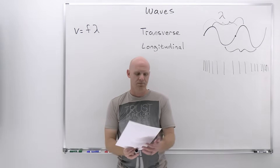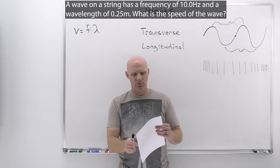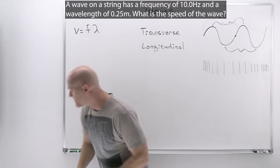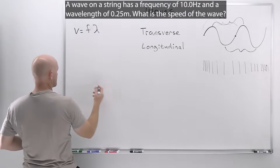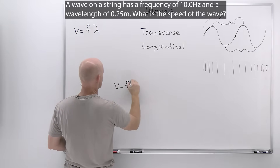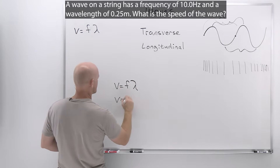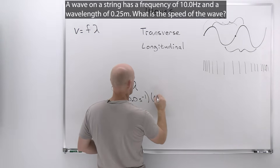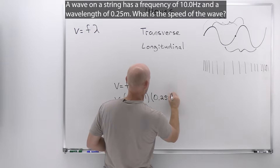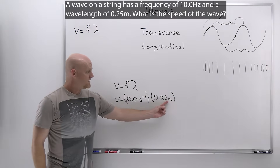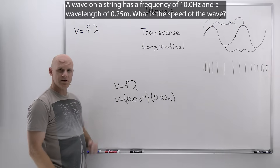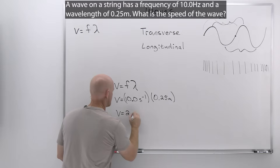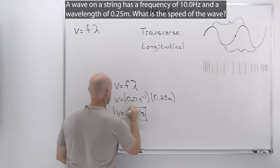For example: a wave on a string has a frequency of 10.0 Hz and a wavelength of 0.25 meters — what is the wave speed? Plugging into v = fλ: frequency is 10.0 Hz (i.e., per second) times 0.25 meters, giving meters per second, the SI unit for speed. The velocity is 2.5 meters per second.